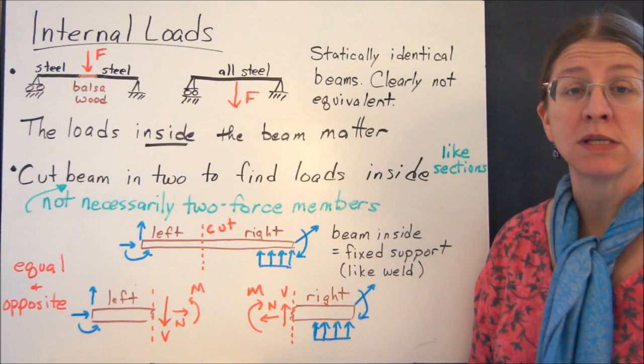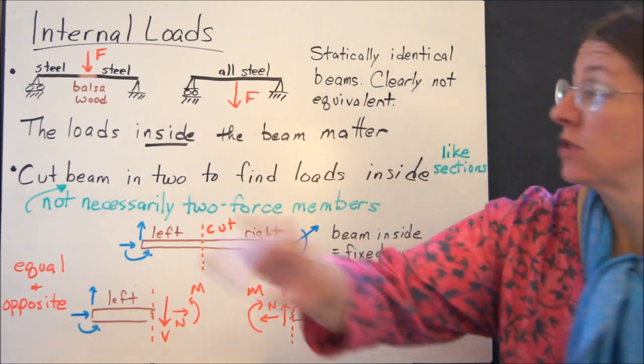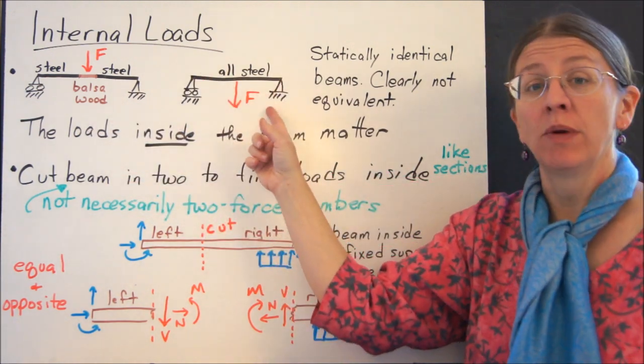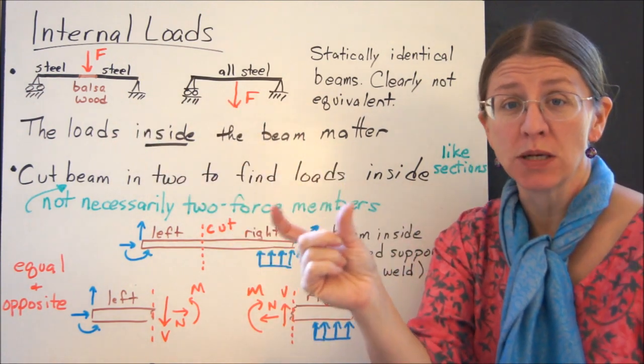I want to talk for a minute about internal loads, what's going on inside the beam. As a bit of background, let's start with this notion that I have two beams right here. One of them is steel all the way through and has the load in the middle. The other one is steel except for a section in the middle that I've replaced with balsa wood.